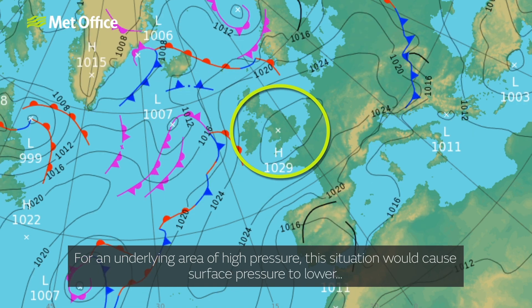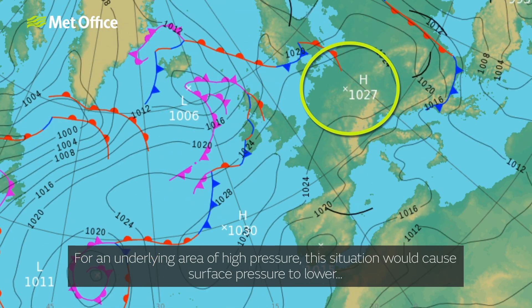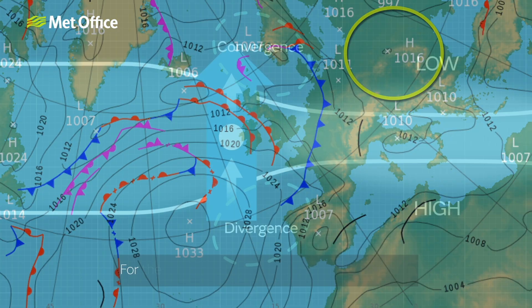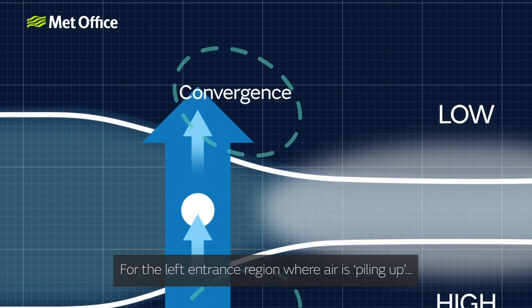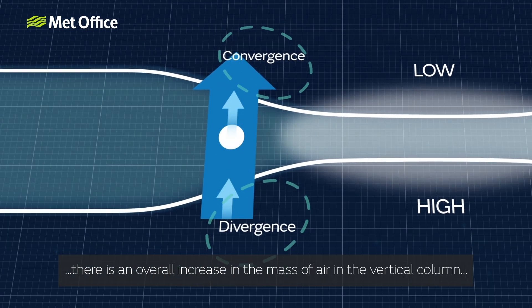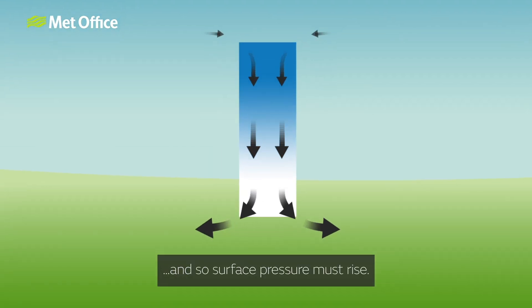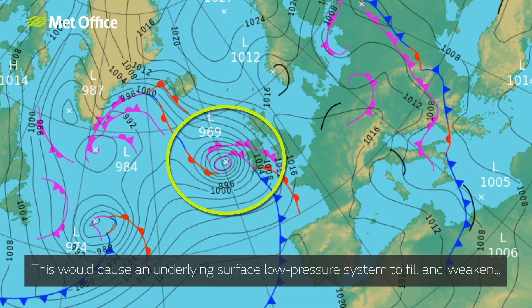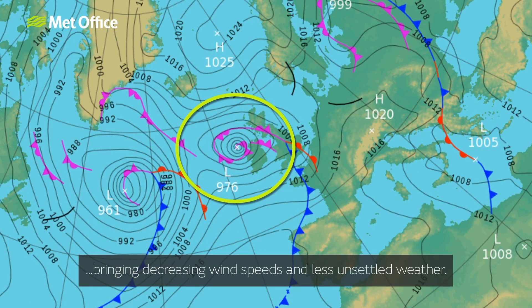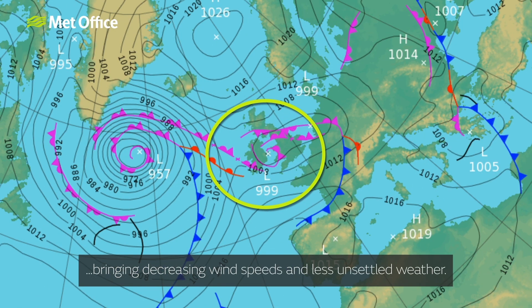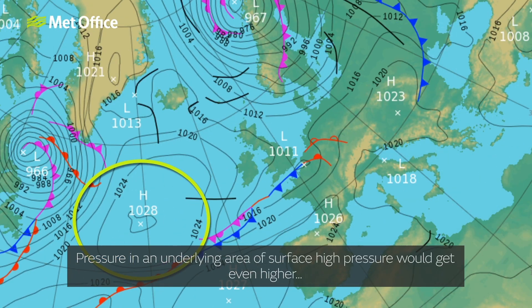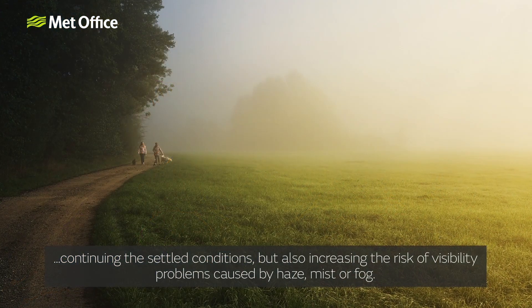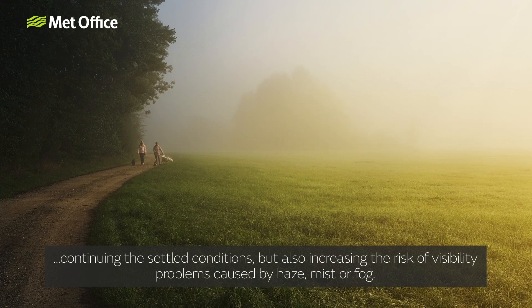For an underlying area of high pressure, this situation would cause surface pressure to lower, lessening its blocking effect and allowing the eastward progression of weather systems. For the left entrance region, where air is piling up, there is an overall increase in the mass of air in the vertical column, and so surface pressure must rise. This would cause an underlying surface low-pressure system to fill and weaken, bringing decreasing wind speeds and less unsettled weather. Pressure in an underlying area of surface high pressure would get even higher, continuing the settled conditions, but also increasing the risk of visibility problems caused by haze, mist or fog.